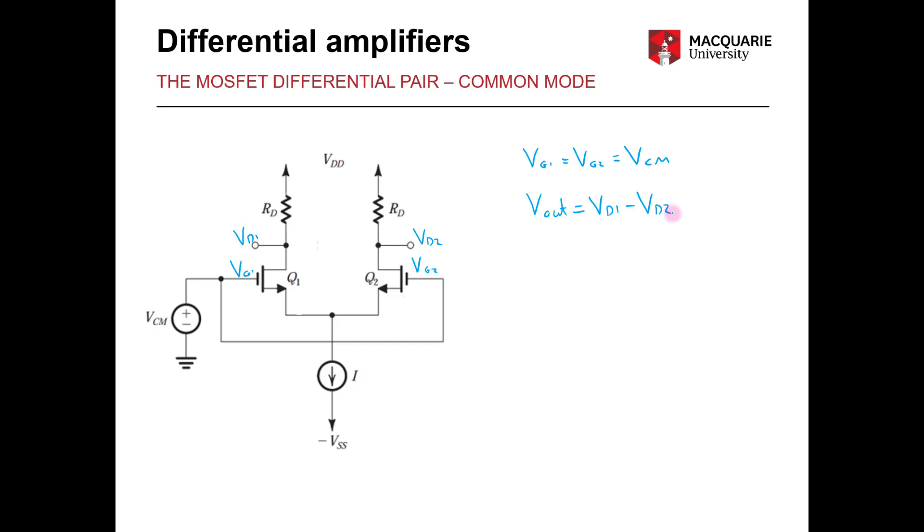So to analyze this circuit is actually quite simple. The first thing to do is to recognize the symmetry of the circuit and to acknowledge that as long as our transistors are identical, Q1 equals Q2, then we have perfect symmetry and our total current I will be split evenly between both sides of the circuit.